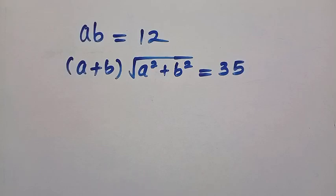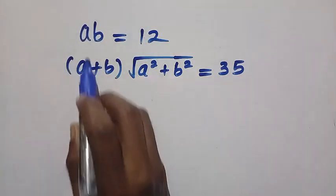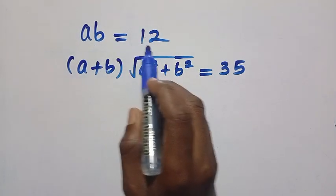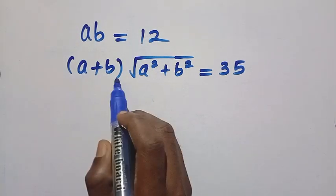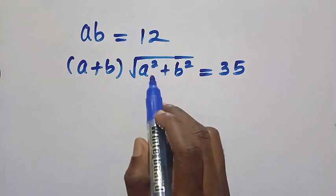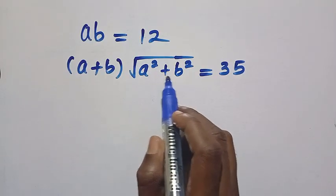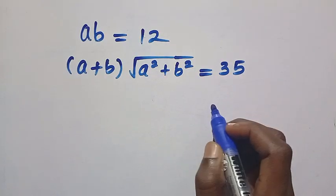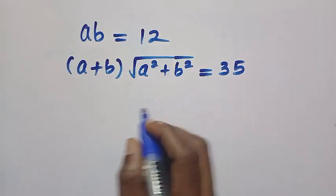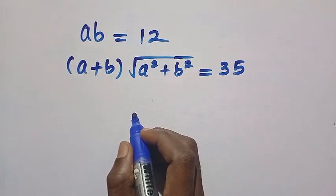Good day viewers, you are welcome. How to solve this nice algebraic problem: given that AB equals 12, and A plus B, multiplied by A squared plus B squared, equals 35. Let's solve this problem step by step.